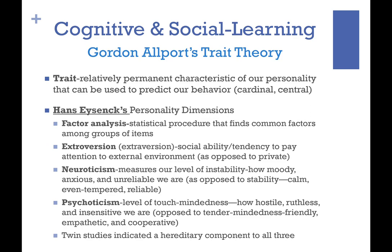Gordon Allport's trait theory defines traits as relatively permanent personality characteristics that can be used to predict behavior. Allport was a humanist psychologist focused on social and personality traits, and he studied the work of Viktor Frankl — whose logotherapy holds that creating purpose in suffering allows people to endure anything. That idea reflects a form of internal locus of control.